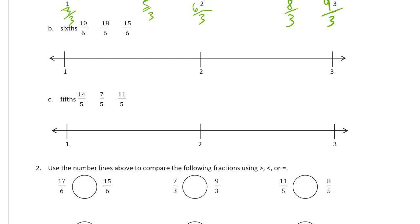Now sixths. For sixths, I usually start with halves and make each half into thirds — that's your best chance of getting them to look equal. Now we're doing sixths. Starting with 1, 1 whole is 6 sixths. Then we have 7, 8, 9, 10 — that's going to be 10 sixths right there. And then 11, and this one is going to be 12 sixths there.